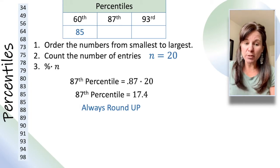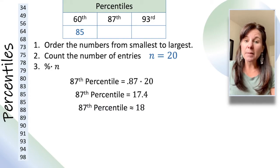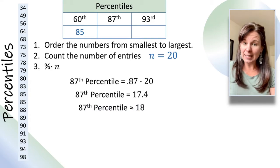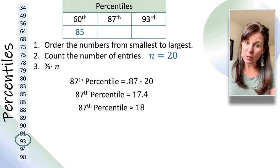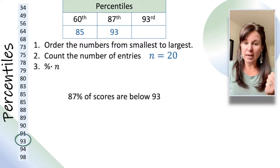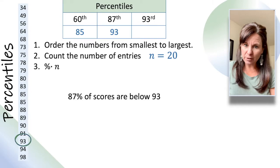So, the 87th percentile is number 18. So, we find the 18th number in our list, which is 93, which means that 87% of scores are below 93.